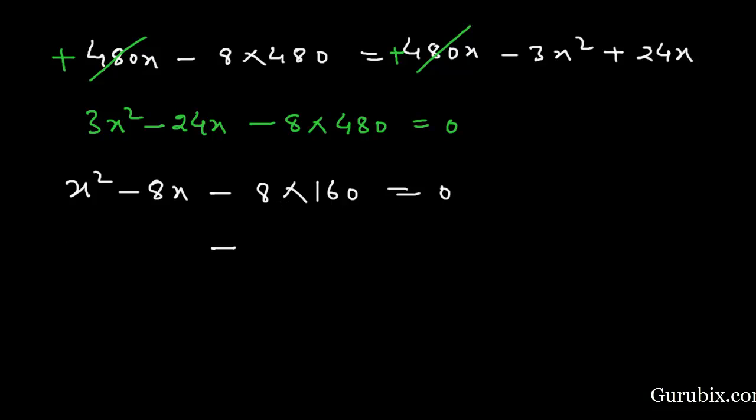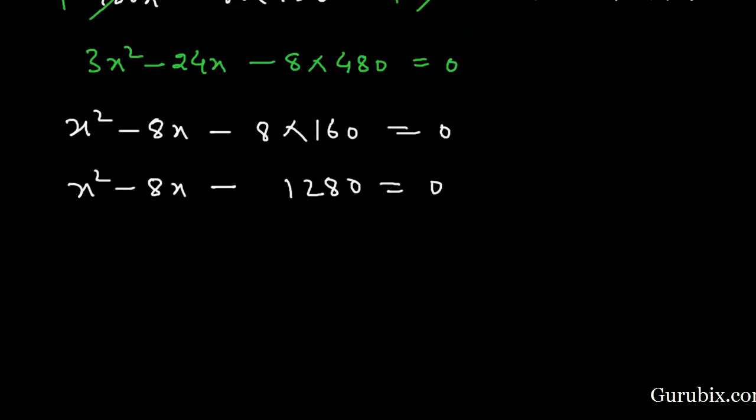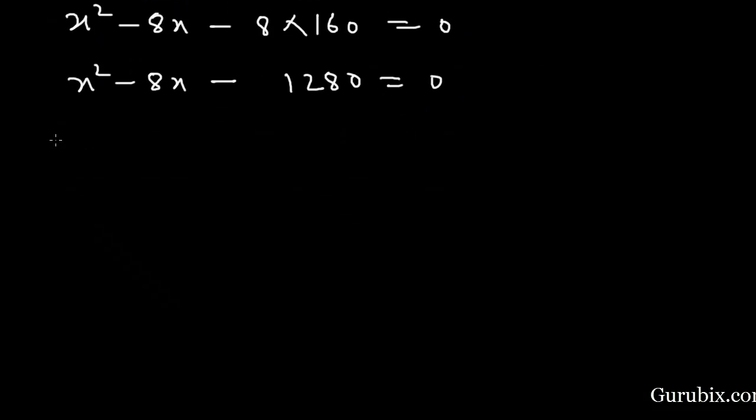Then we have x squared minus 8x minus 8 times 160 equals 0. Now we shall factorize this quadratic equation by using quadratic formula. For that we shall pick the coefficient of x squared, that is A, and A equals 1.